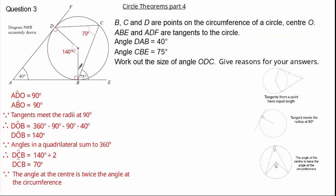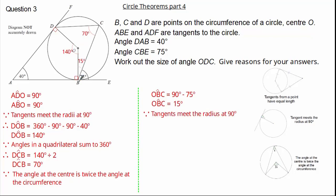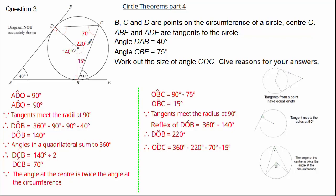Let's see if we can calculate angle OBC. If we know this is 90 degrees, then 90 subtract our 75 gives us an angle of 15 degrees, because tangents meet the radius at 90 degrees. Now let's work out the reflex angle of DOB: 360 subtract our 140 gives us an angle of 220. Now we can find angle ODC: 360 subtract our 220 subtract our 70 subtract our 15 gives us a final answer of 55 degrees. This is because angles in a quadrilateral sum to 360 degrees.